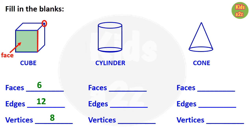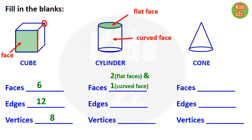Now for cylinder: this is a flat face of a cylinder, so a cylinder has two flat faces; and this is the curved face of a cylinder, so a cylinder has two flat faces and one curved face. These are the edges — look at the picture — so a cylinder has two edges and there are no vertices, so beside vertices, kids need to write zero.